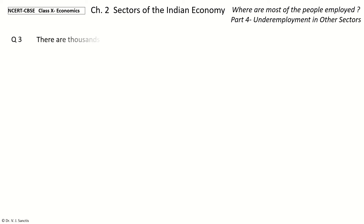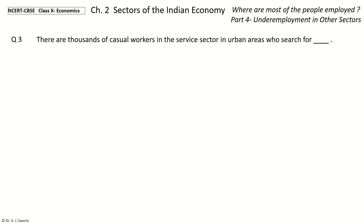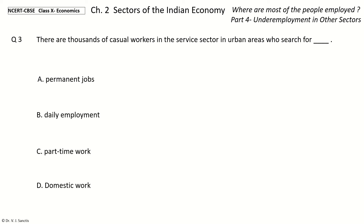Question 3: There are thousands of Casual Workers in the Service sector in urban areas who search for what? The options are: Permanent Jobs; Daily Employment; Part-Time Work; Domestic Work. The answer is Daily Employment. Casual Workers in the Service sector in urban areas search for Daily Employment.